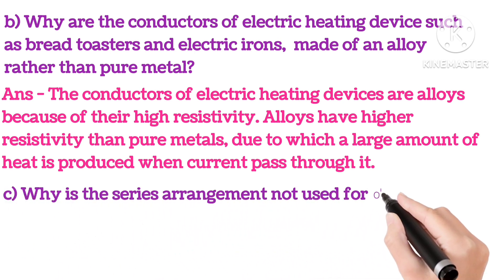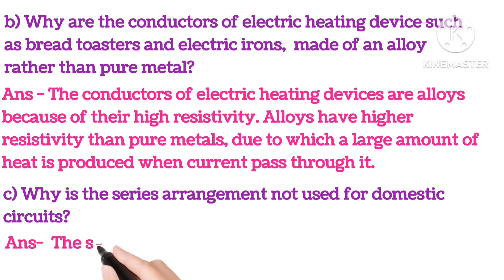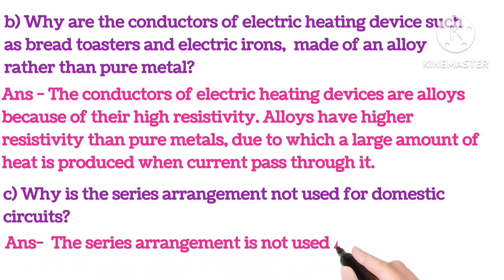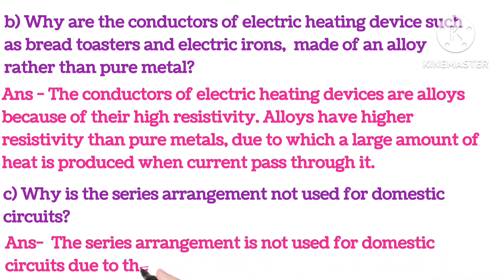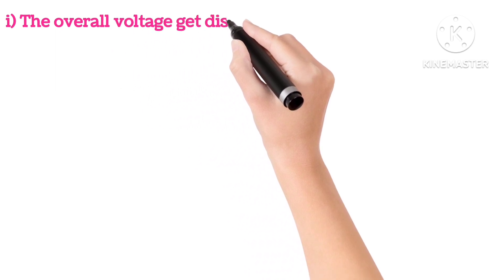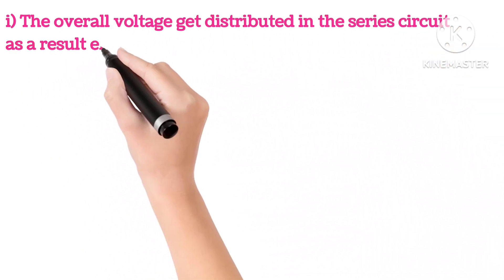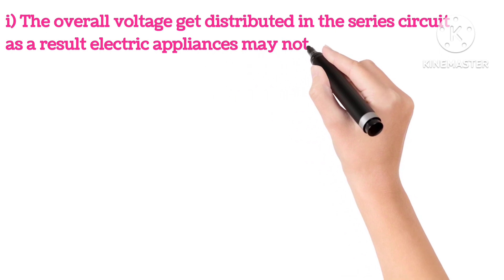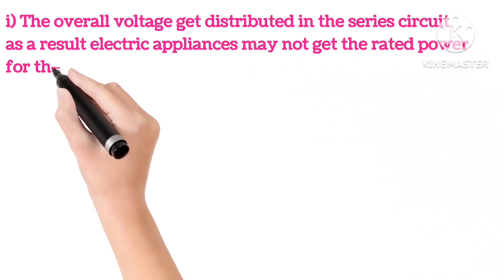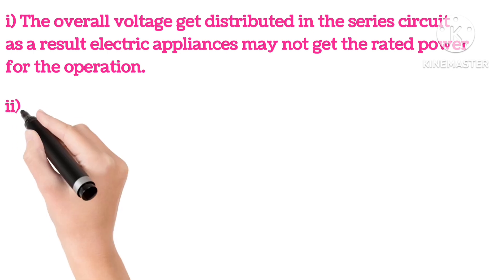Why is the series arrangement not used for domestic circuits? Answer is: the series arrangement is not used for domestic circuits due to the following reasons. First reason is the overall voltage gets distributed in the series circuit. As a result, electric appliances may not get the rated power required for operation.